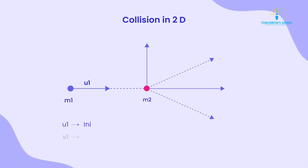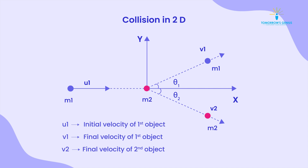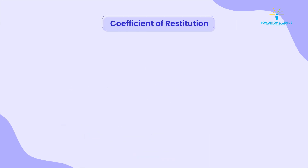Collision in two dimensions: when the initial and final velocities lie in a plane, it is called a two-dimensional collision. It is also called an oblique collision. In oblique collision, particles don't move in the same straight line after collision.